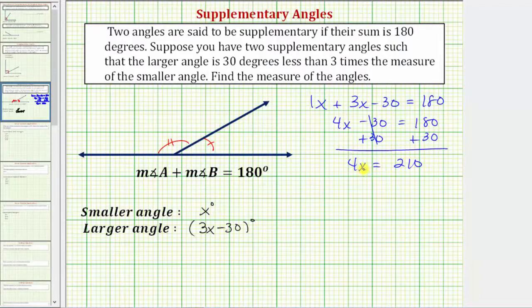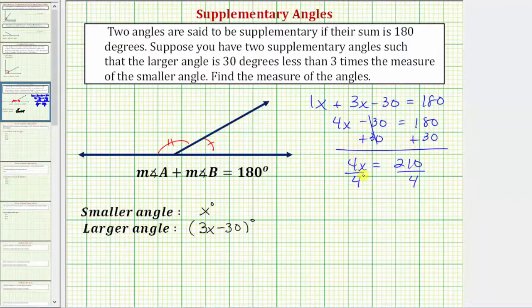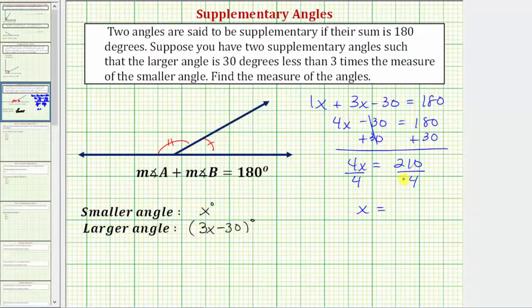4x means four times x, so our last step is to undo this multiplication and solve for x by dividing both sides by four. Dividing by four undoes multiplying by four, so x equals 210 divided by 4, which equals 52.5.